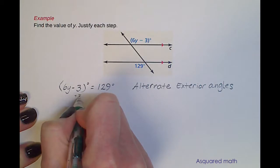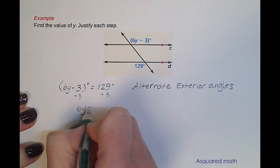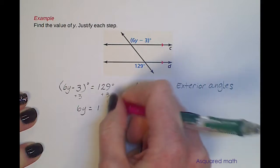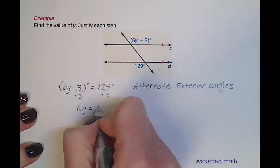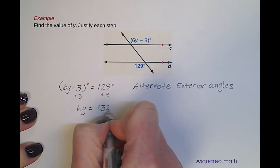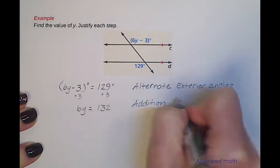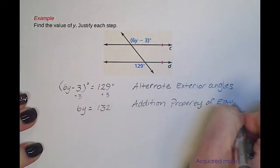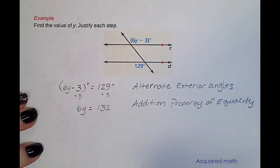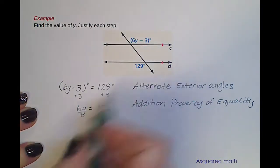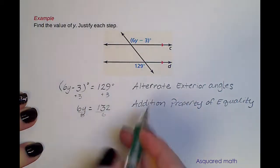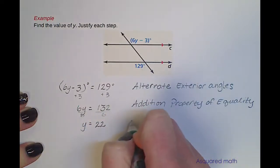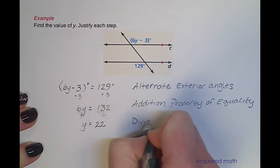From there, we can add 3 to both sides, so we're left with 6y equals 132 — and that's your addition property of equality. In the last step, if we divide everything by 6 — since we have 6 times y — we will end up with y equals 22. Because we are dividing, that is your division property of equality.